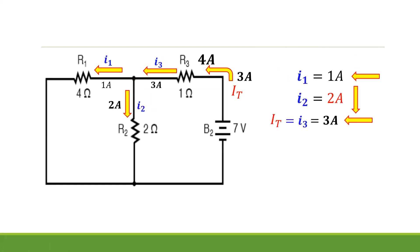To summarize the currents from the 7-volt source: I1 is 1 ampere going to the left, I2 is 2 amperes in the downward direction, and I total which equals I3 is 3 amperes going to the left.